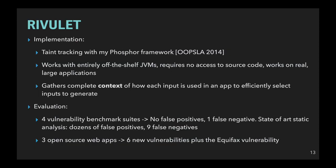We implemented Rivulet using our dynamic taint tracking system Phosphor. Rivulet works with entirely off-the-shelf JVMs and applications. It doesn't require access to source code and it easily integrates with commonly used automated testing frameworks like JUnit and Maven. We evaluated Rivulet on several benchmark suites as well as on three open source web apps. Rivulet detected six new vulnerabilities in open source apps and significantly outperformed existing injection detection tools on benchmarks. Rivulet is freely available on GitHub and my co-authors and I would be happy to talk to anyone who's interested in working with it. Thank you.